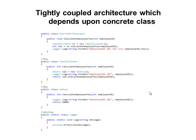Depend on abstractions. Do not depend on concrete classes. When we build an application architected in such a way that it depends upon abstractions instead of depending on the concrete classes, then such a system is loosely coupled. It's very easy to test such a system. It's expandable and it's maintainable.